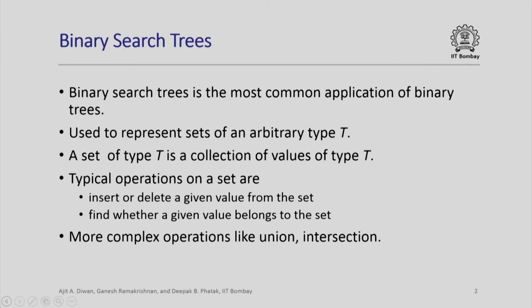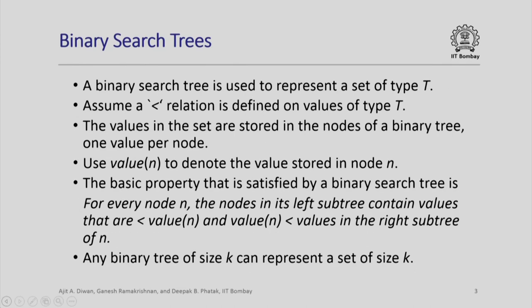This also allows more complex operations like union and intersection of sets, but we will not look at those here. In a binary search tree, we represent a set of type T, assuming there is a less-than relation defined on the values of type T — given any two values of type T, we can say which value is smaller than the other. The values in the set are stored in the nodes of a binary tree with one value per node.